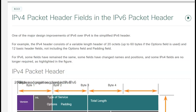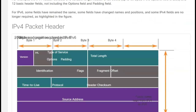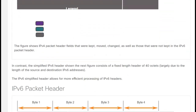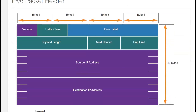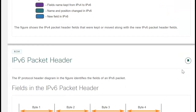Now, when you start looking at IPv4 header fields versus an IPv6 header, one of the major design improvements was to simplify the IPv6 header. Looking at the IPv6 header, it is very simple — there is version, traffic class, a little bit of flow information, how big a packet you are sending, who's the next person in line, and how many times can it move between different devices.